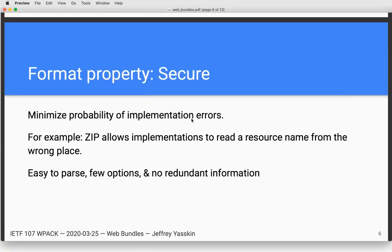We want to make the format secure, which means minimizing the probability of implementation errors. This isn't about cryptography — it's about memory safety and ease of implementation. For instance, ZIP allows implementations to make at least two kinds of mistakes in picking what the name of a resource is: they can read it from the resource header instead of the global index, and they can pick the first instead of the last copy of a name from that index. That has caused security vulnerabilities. So we want to make the format easy to parse with few choices that would increase implementation complexity.